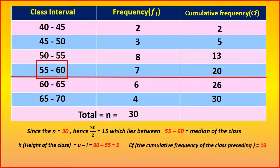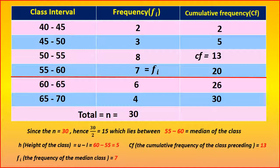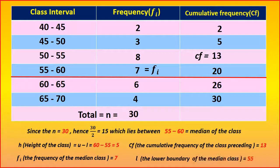CF is equal to the preceding number of this one. The preceding number is CF, that is 13. And F1, the frequency column, that is F1 is equal to 7. And then lower limit or lower boundary of the median class is equal to 55.